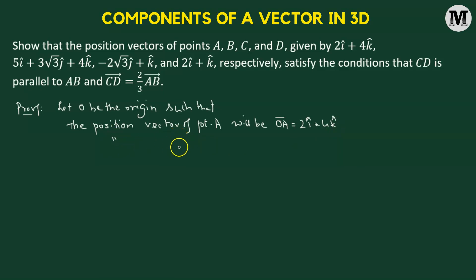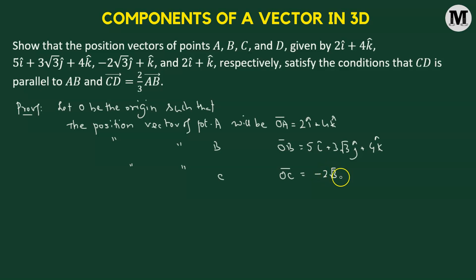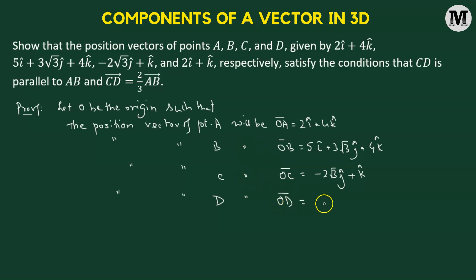Similarly, the position vector of point B is OB vector, given by 5i cap plus 3 times square root of 3 j cap added to 4k cap. The position vector of point C is OC vector, given by negative 2 times square root of 3 j cap added to k cap. And the position vector of point D is OD vector, given by 2i cap plus k cap.